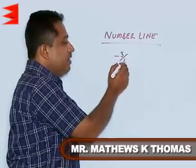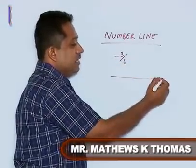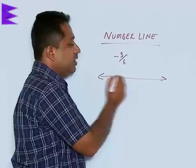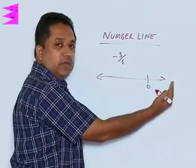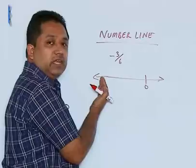Now, here, when we have negative numbers, we have to understand that negative numbers lie on the left side of 0. So, the right side is for positive numbers and the left side is for negative numbers.